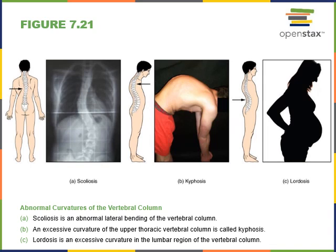Abnormal curvatures of the vertebral column include scoliosis, which is an abnormal lateral curvature. An exaggerated thoracic curvature is known as kyphosis, commonly referred to as hunchback. An exaggerated lumbar curve is known as lordosis, commonly referred to as swayback.